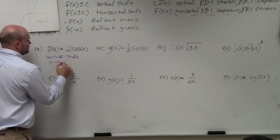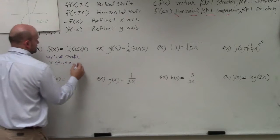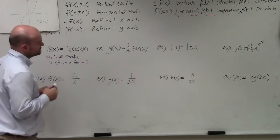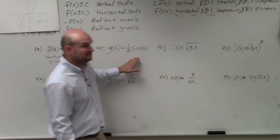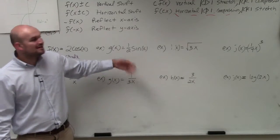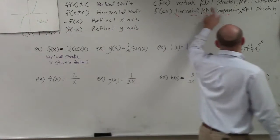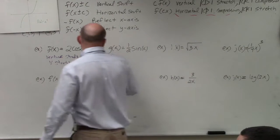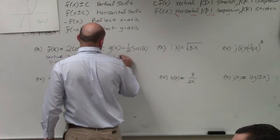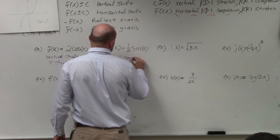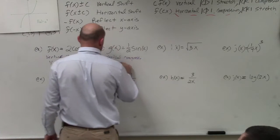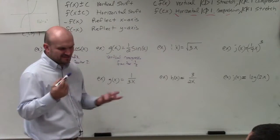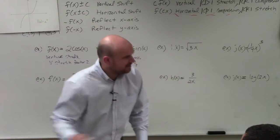Vertical stretch, factor of 2. Then I see here — I'm multiplying the outside, but the absolute value of C is less than 1. So now it's a vertical compression, factor of one half. That's basically your factor — what you're multiplying by.